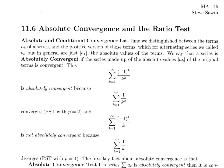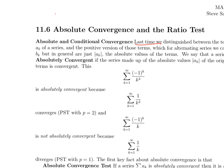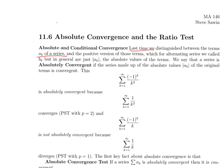Remember last time, we distinguished between the terms a_k of the series and the positive version of those terms, which for an alternating series we called b_k. But in general, the positive version of a number that might be positive or negative is just the absolute value.